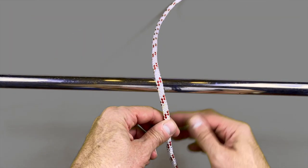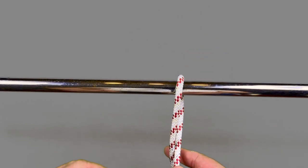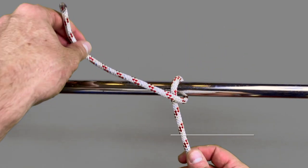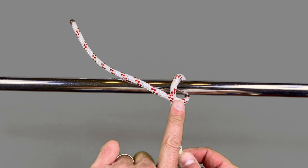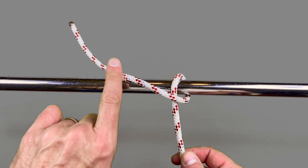Step one of the constrictor knot is to loop the working end around the item you want to constrict on, flipping it over the top of the standing end to make an X.